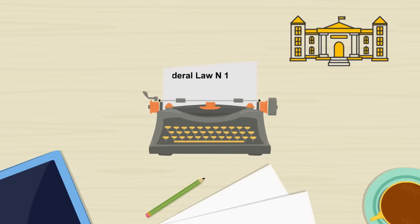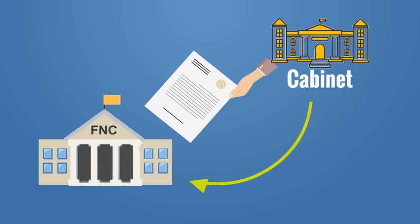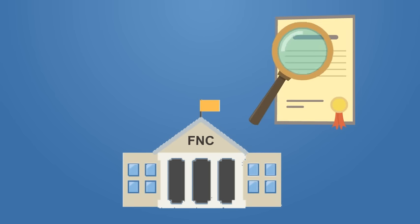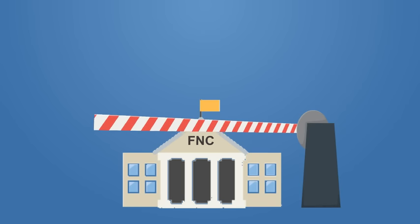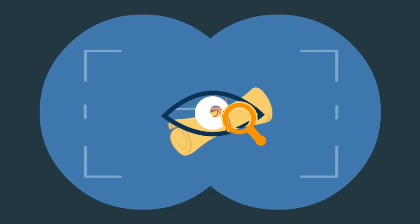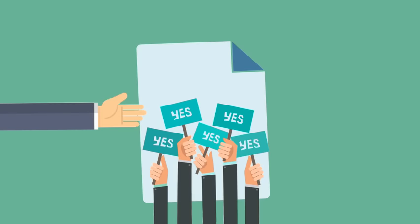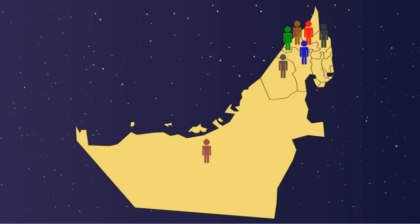The cabinet proposes and drafts legislation before submitting the bill to the Federal National Council, which reviews the bill and can only propose amendments but cannot initiate new legislation, seeing its role as a consultative body. Once reviewed by the FNC, the proposed legislation is presented to the president for signature, after being ratified by the supreme council, who is the highest authority within the federation and comprises the seven Emirates rulers.